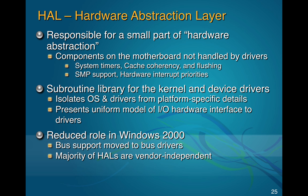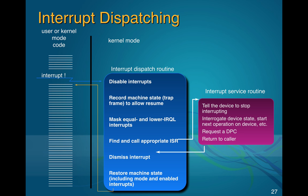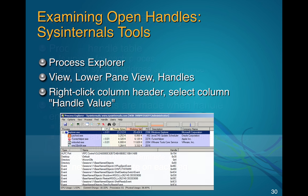The hardware abstraction layer handles components on the motherboard and is becoming less important than it used to be. Interrupts work like this: you're running user code, you decide you want to do a kernel operation, an interrupt jumps over to the interrupt dispatch routine which tells the kernel to do something, then returns. Each process has a handle — a software object like a name that lets your program control something — and it checks security rules like read, write, delete, and terminate rights on objects.